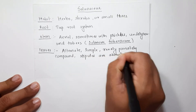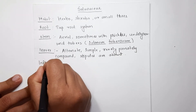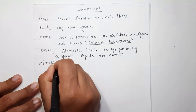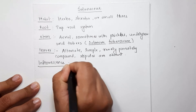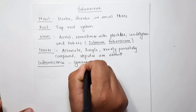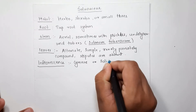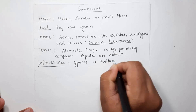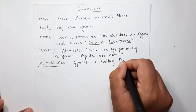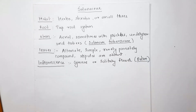The next one is the inflorescence. The cymose type of inflorescence occurs in the Solanaceae family, which is generally common in Solanum. Sometimes solitary flowers appear as individual flowers, as in the example of Datura, in which a single flower is represented as the inflorescence, called a solitary flower.